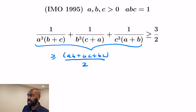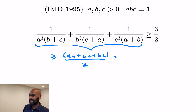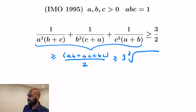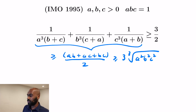We can now find a lower bound for the numerator using the AM-GM inequality, which says AB + BC + CA ≥ 3·∛(A²B²C²). Since ABC = 1, we have A²B²C² = 1, so the cube root equals 1, giving AB + BC + CA ≥ 3. Therefore the entire expression is ≥ 3/2, which is exactly the lower bound we needed to prove.